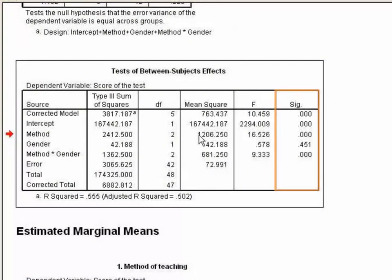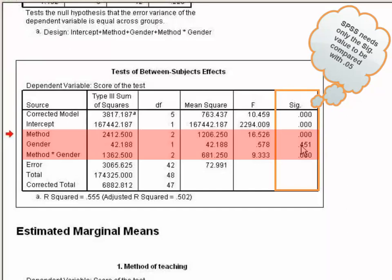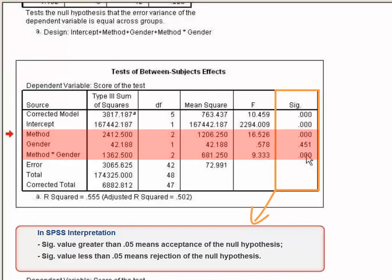In this table there are different sig values. We are interested in three: 0.000 for method, 0.451 for gender, and 0.000 for the method-by-gender interaction. For testing the hypothesis, SPSS needs only the sig value to be compared with 0.05. Remember, the sig value generated by SPSS and the level of significance are completely different. In SPSS interpretation, a sig value greater than 0.05 means acceptance of the null hypothesis, and a sig value less than 0.05 means rejection of the null hypothesis.